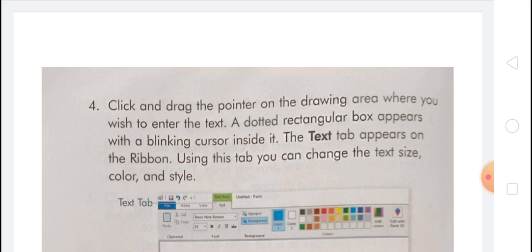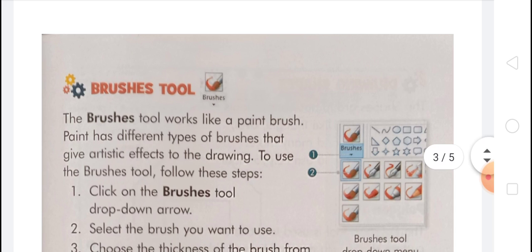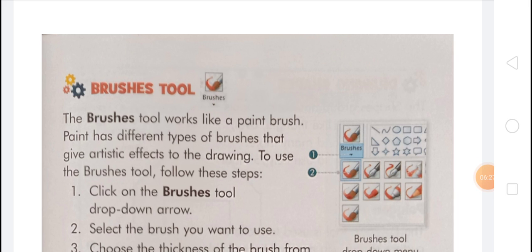The brushes tool works like a paint brush. Paint has different types of brushes that give artistic effect to the drawing. To use the brushes tool: first, click on the brushes tool drop-down arrow. Second, select the brush you want to use. Third, choose the thickness of the brush from the size drop-down list.